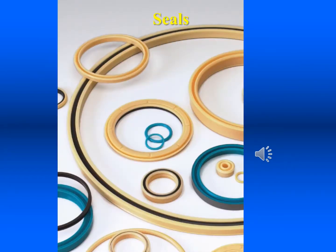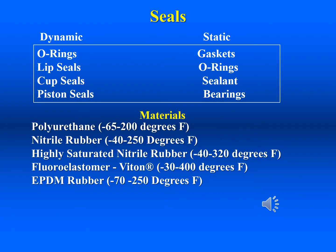Seals prevent the escape of fluids in systems and allow for full control of the fluid. They are made from a wide range of materials and are selected according to the environmental conditions. Seal technology has come a long way in the last 50 years, and we now have a seal for almost every imaginable application. Seals may be divided into two main categories. Seals that must control fluids as they move or between moving parts are dynamic seals. Seals that are trapped between parts that do not move are called static seals. The most common static seals are O-rings and gaskets.